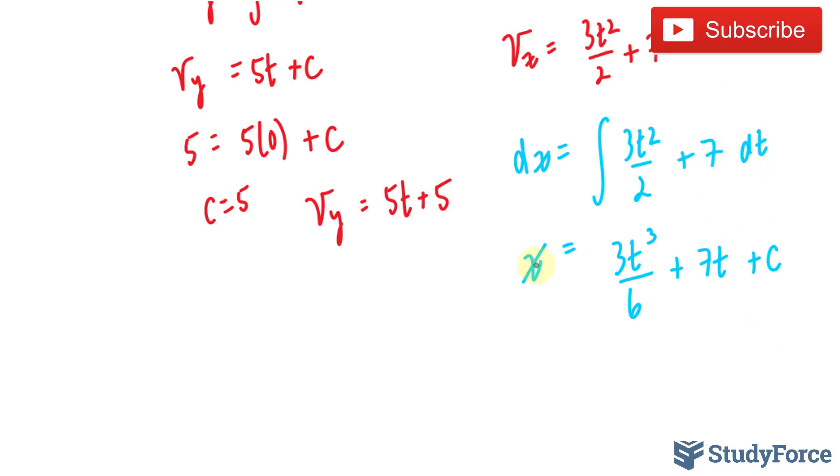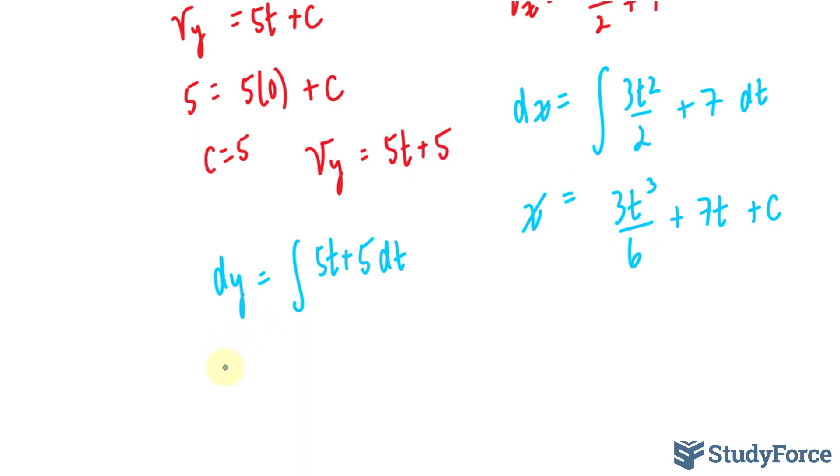Let me do the same thing now for v_y. So dy equals the integral of v_y, which is 5t plus 5 with respect to time. Taking the integral, we get y equals the antiderivative of 5t is 5 over 2t squared, and the antiderivative of 5 is 5t plus c.